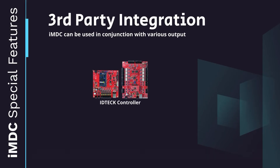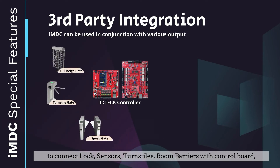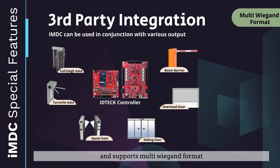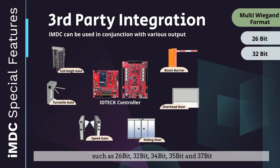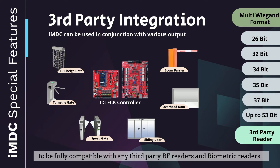4. Third-Party Integration. IMDC provides input and output interfaces to connect locks, sensors, turnstiles, and boom barriers with a control board. It supports multiple Wiegand formats such as 26-bit, 32-bit, 34-bit, 35-bit, and 37-bit to be fully compatible with any third-party RF readers and biometric readers.